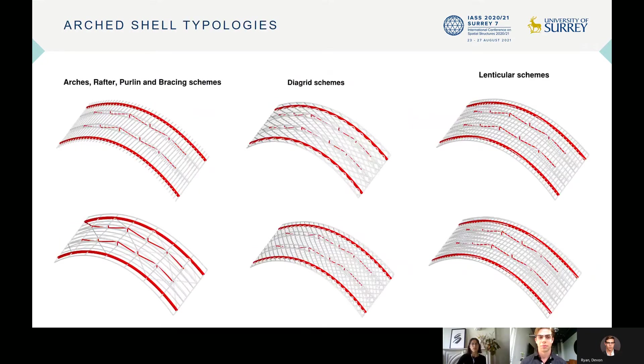Once the 2D shape was fixed, we introduced the third dimension that can be resolved by many structural systems. We here focused and considered three main families that we compared together. We looked at the arch connected with rafter, perline, and bracing systems that are commonly used in roof structures. We looked at diagrid and grid shell schemes,